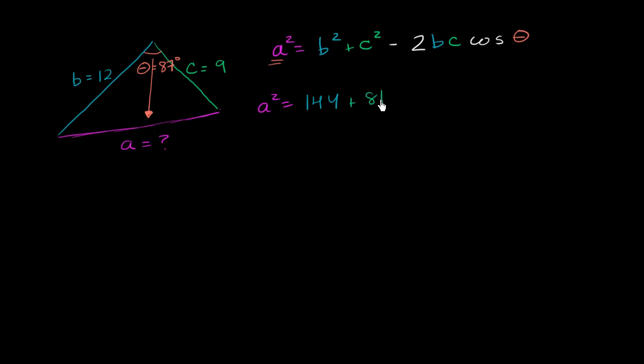So plus 81 minus 2 times b times c. So that's minus 2 times 12 times 9 times the cosine of 87 degrees.